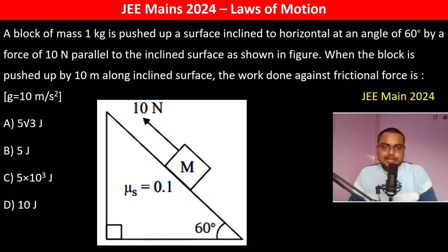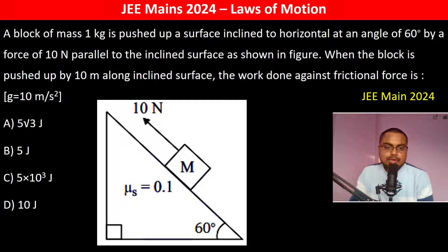The block of mass 1 kg is pushed up a surface inclined to horizontal at an angle of 60 degree by a force of 10 N parallel to the inclined surface. Upar a block behench raha hai. And here is 60 degree.